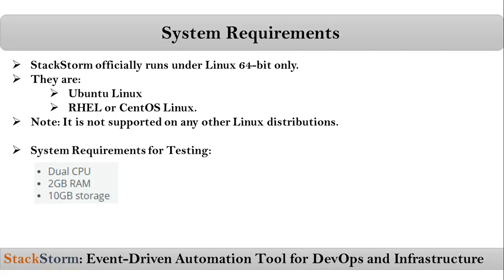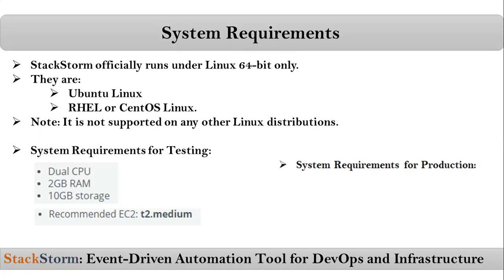With these configurations we can launch our required OS from any cloud or from VMware. If we go with AWS cloud, the recommended EC2 instance type for testing is t2.medium. For production, the requirements are quad core CPU, greater than 16 GB RAM, 40 GB storage, and the recommended EC2 instance type is m4.xlarge.